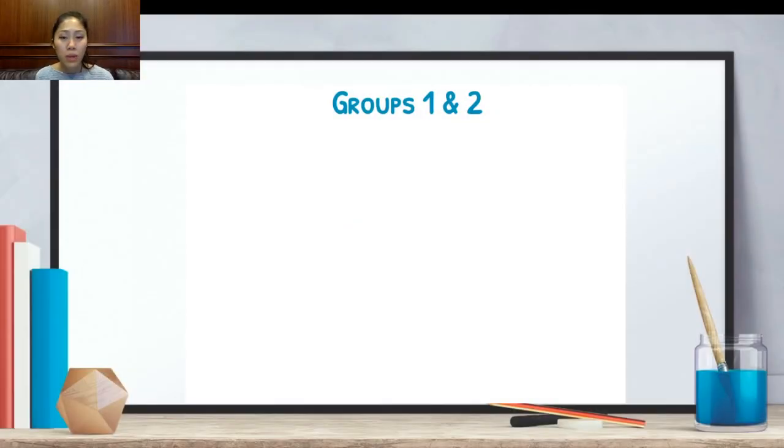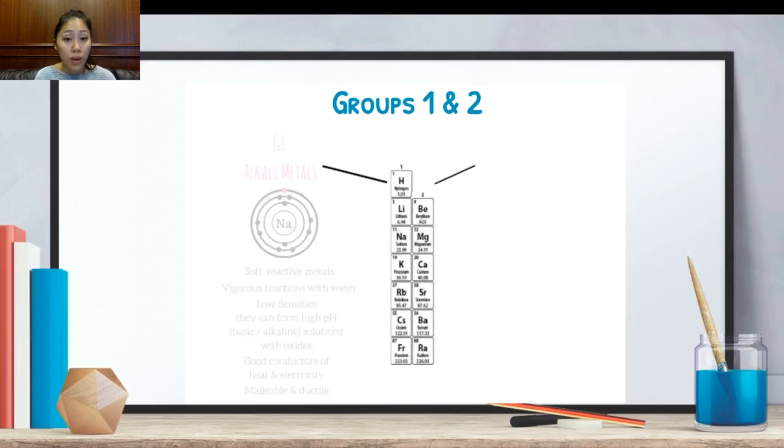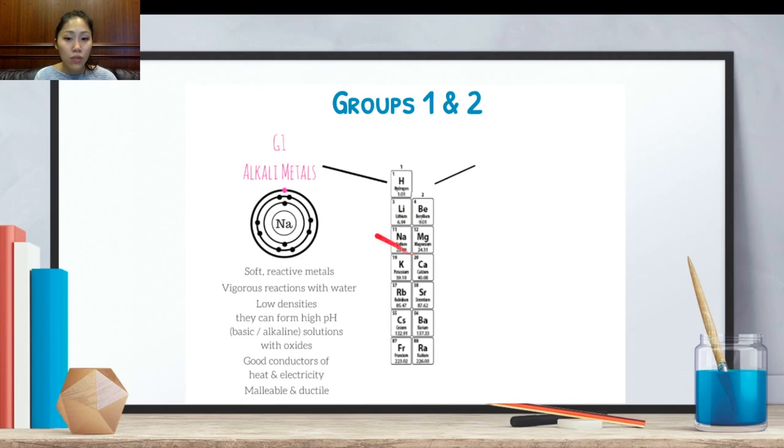Now, let's start with the properties of each one of these groups. The first one we're going to look at is group one, and that's the alkali metals. An example is looking at the structure of sodium, using this Bohr diagram. And alkali metals are soft, reactive metals. They react vigorously with water, they have low densities, and they can form high pH solutions with oxides.